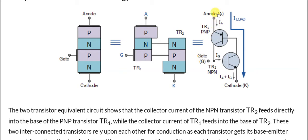In normal circumstances, this internal junction is not forward biased — it has a depletion region. Due to this resistive junction, the load current cannot pass through the device. You can see we have three P-N junctions: the first, the second, and the third, and the two transistor equivalent circuit is arranged accordingly.